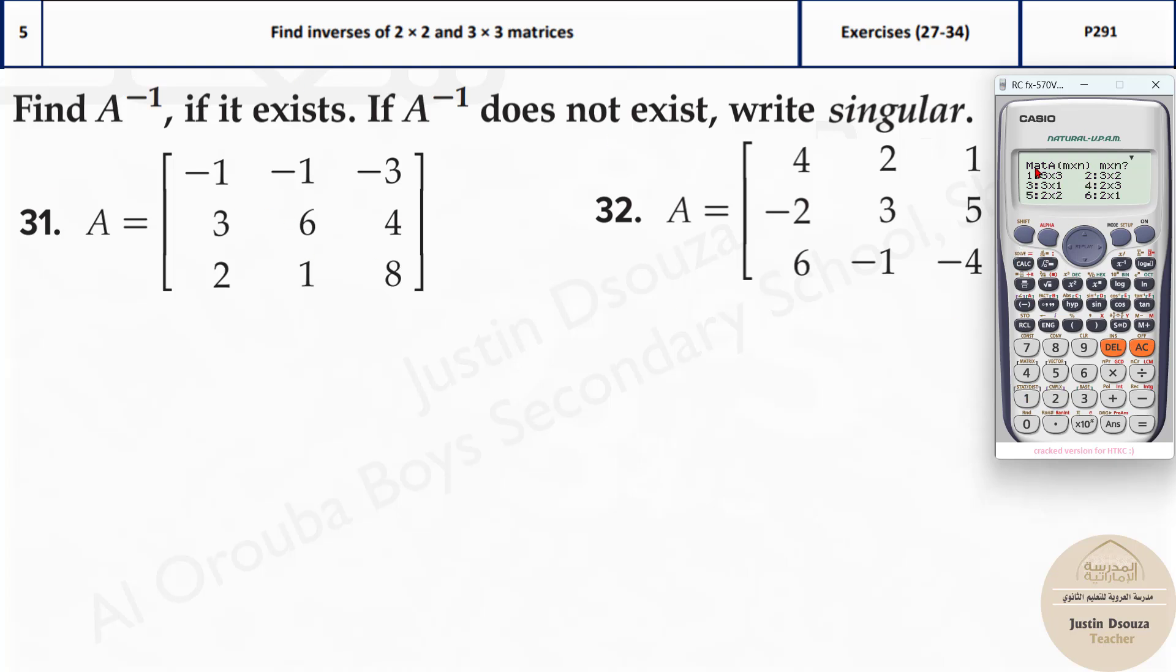Type in the matrix A. It's 3 cross 3. So, it's option 1. Now, I'll just type the values. 1, minus. Sorry. It's minus 1, minus 1, minus 3. 3, 3, 6, 4, 2, 1, 8. So, once this is done, you need to press AC.